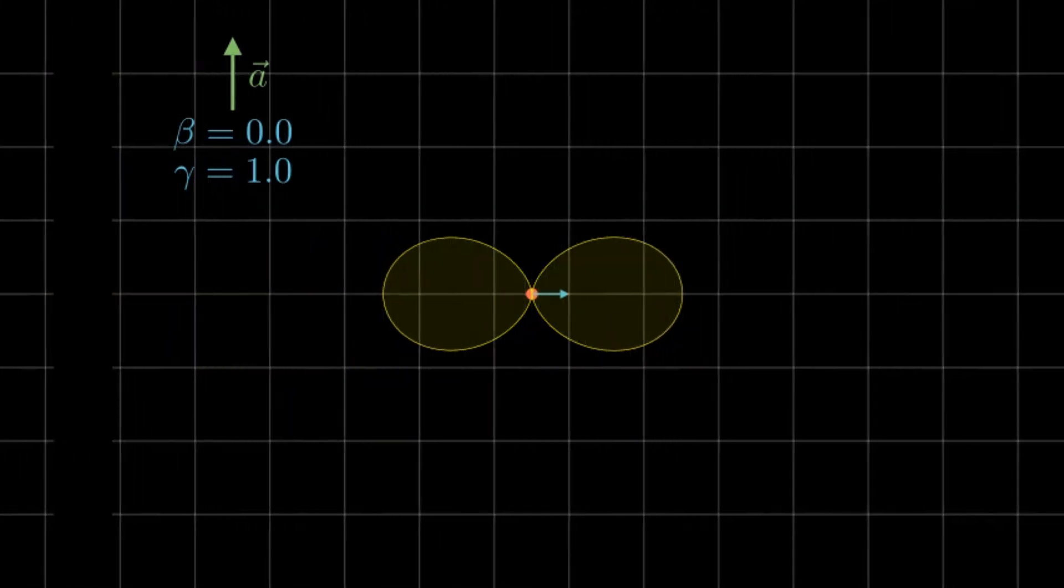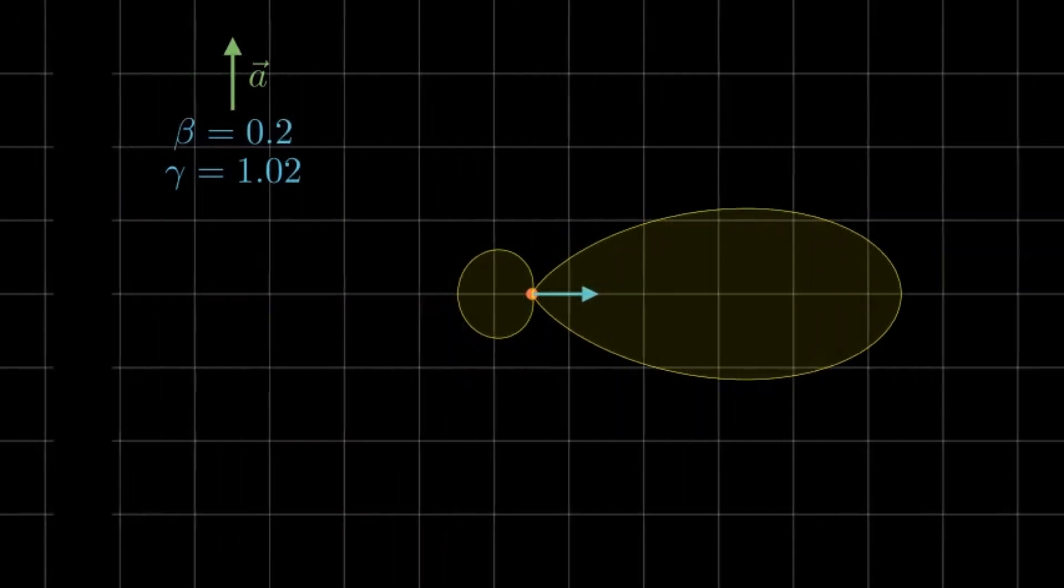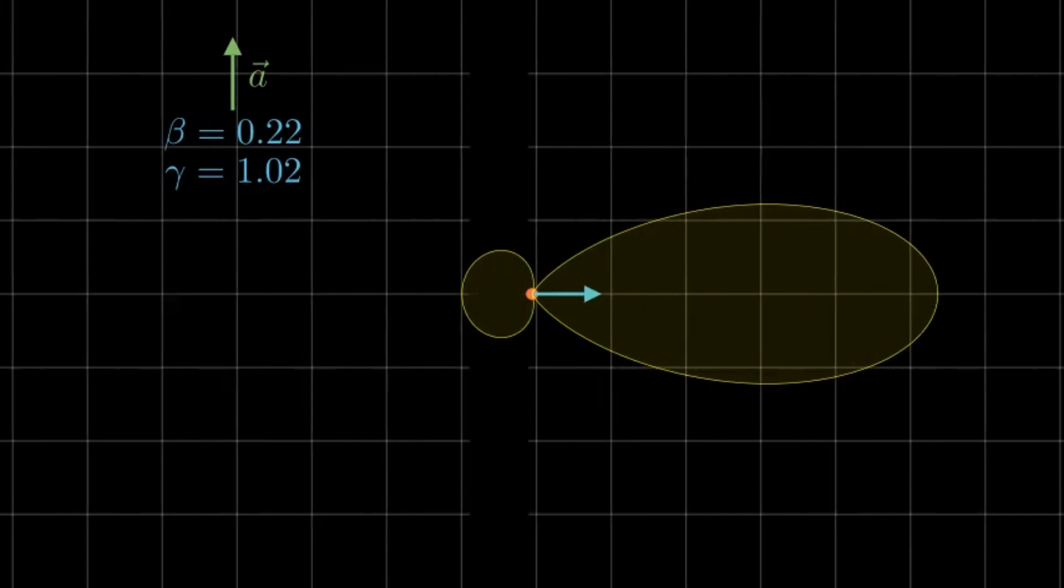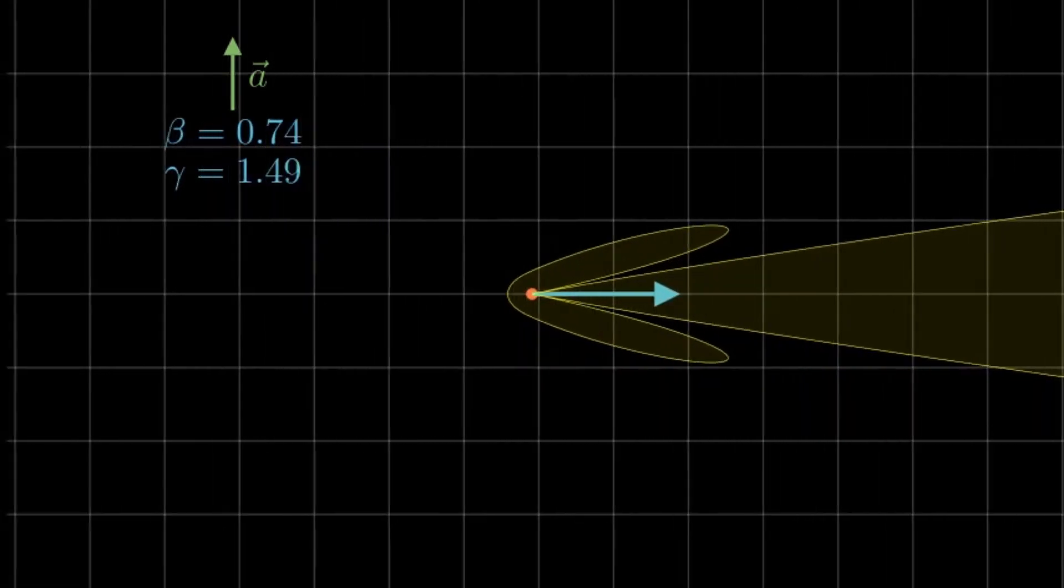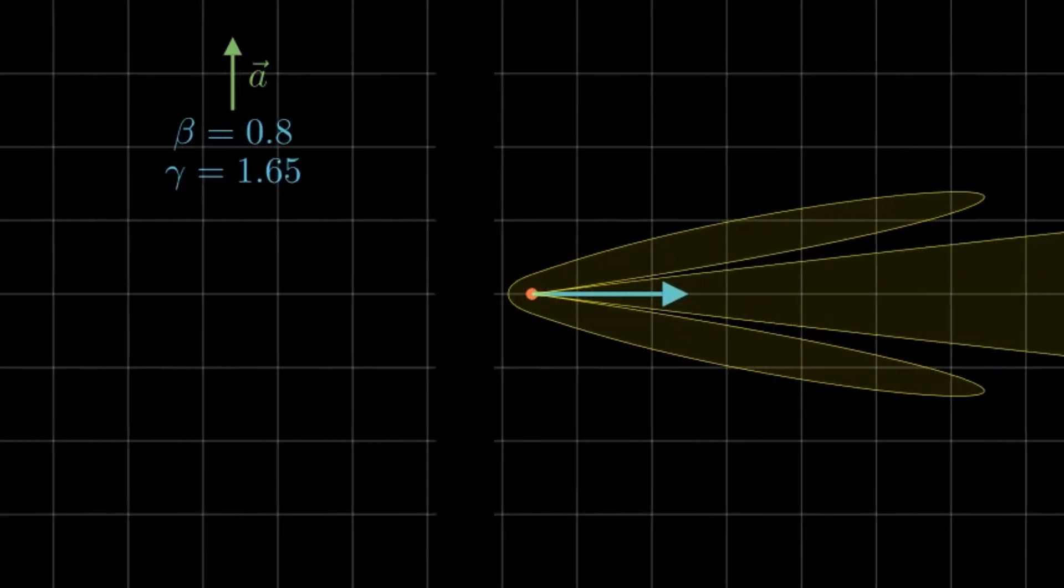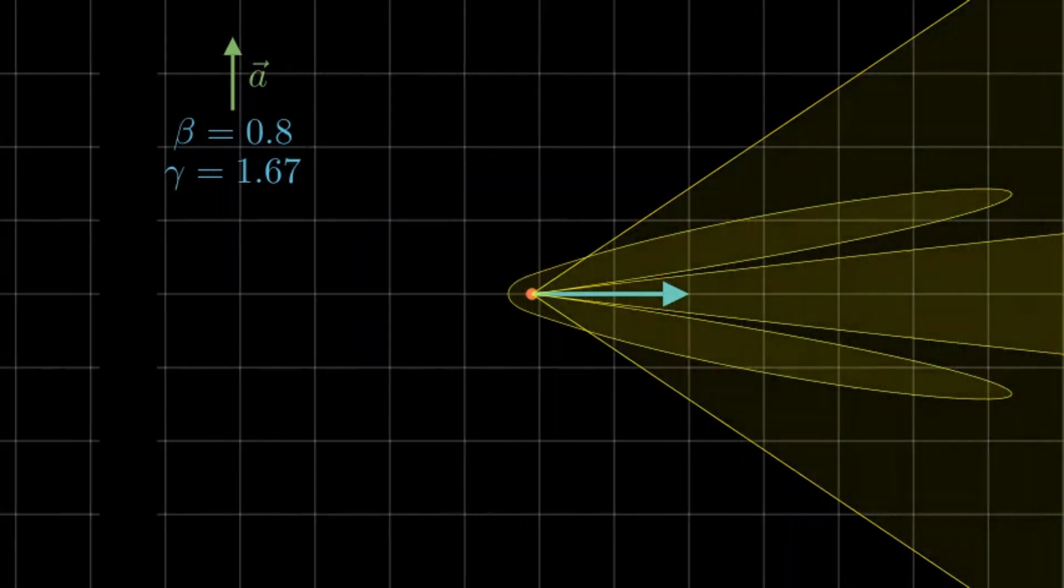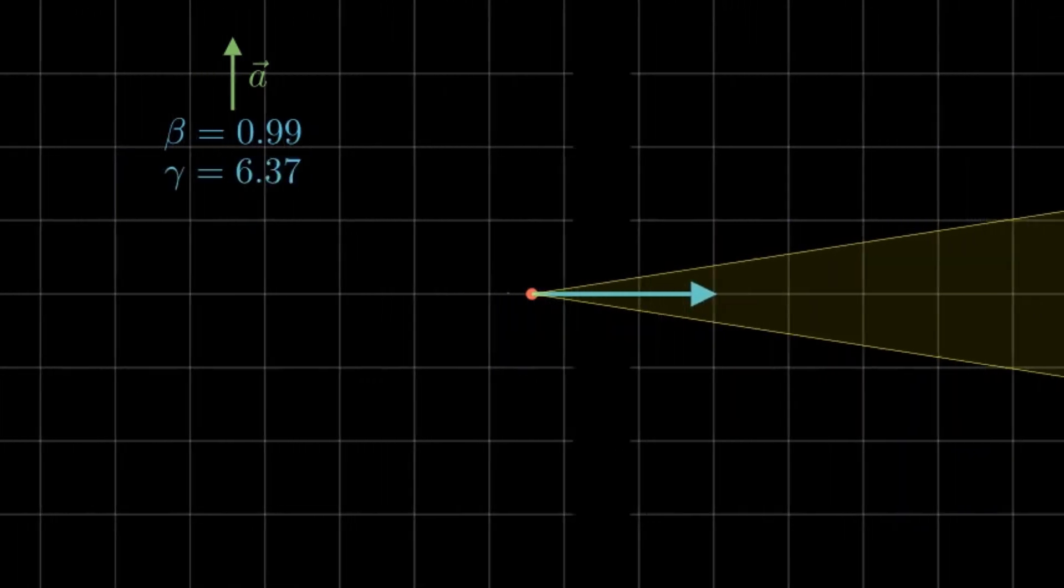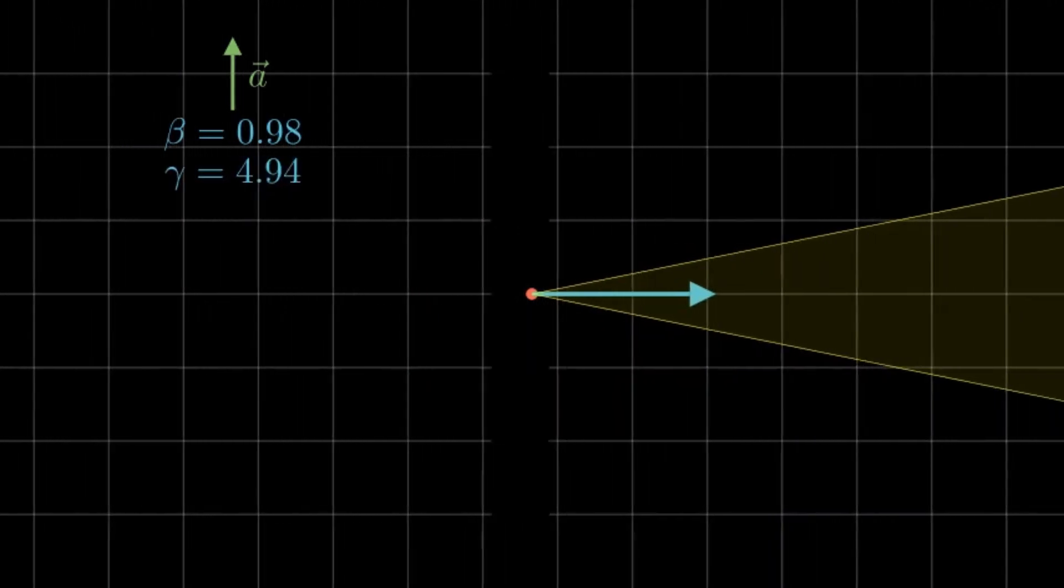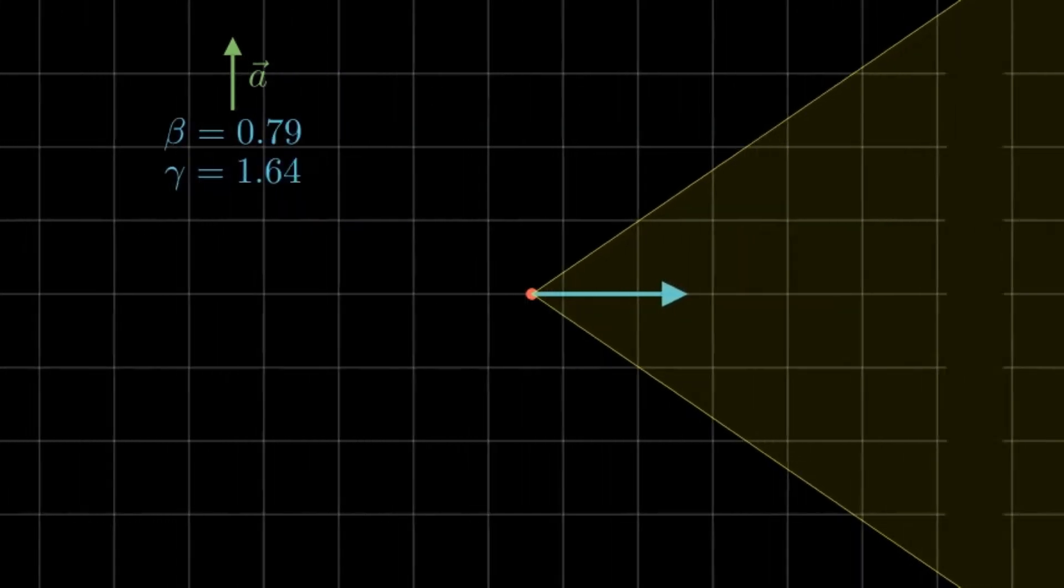When we increase the velocity, the beaming effect causes the right side to expand and the left to contract. As the velocity gets more relativistic, the left beam actually warps around the electron to beam rightwards. Thus we are able to once more use the one over gamma cone approximation in the highly relativistic cases. It is this perpendicular acceleration case that is most interesting to me.